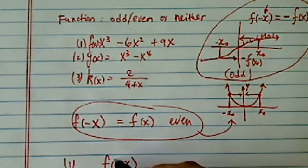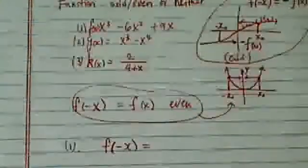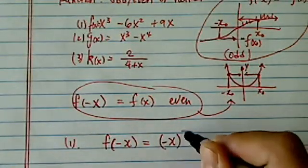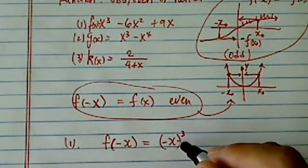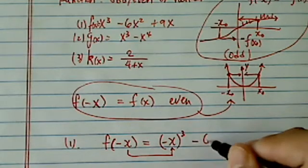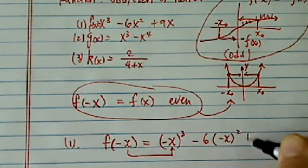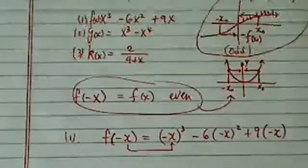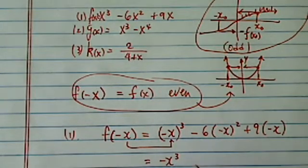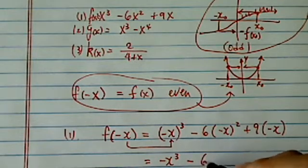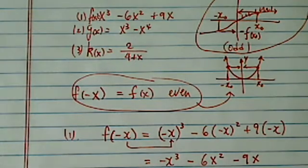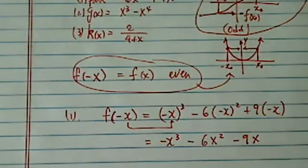f of minus x, let's see what happens if I put a minus x into the function itself. Then I have, every time I see x, I'm going to replace it with a minus x: minus x cubed minus 6 times minus x squared plus 9 times minus x. So I did it as minus x cubed, minus 6x squared doesn't change, minus 9x.